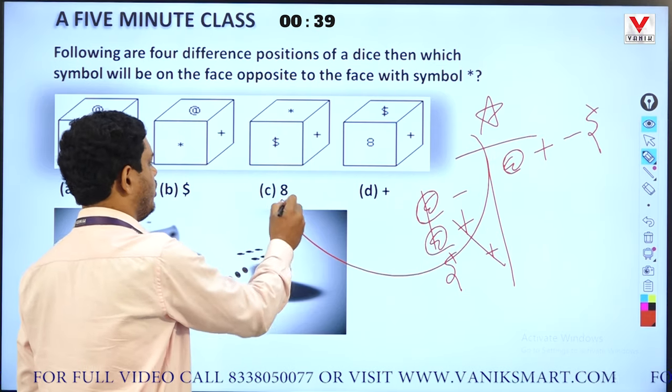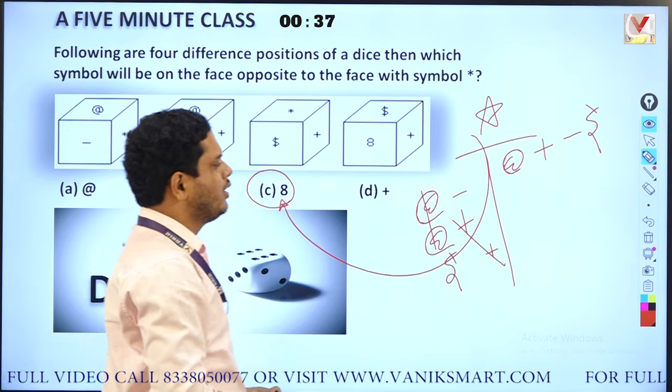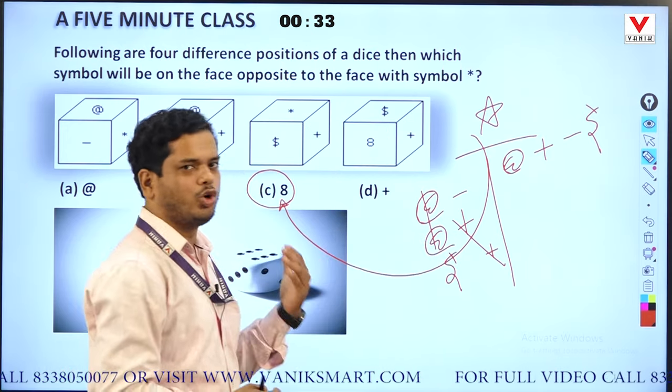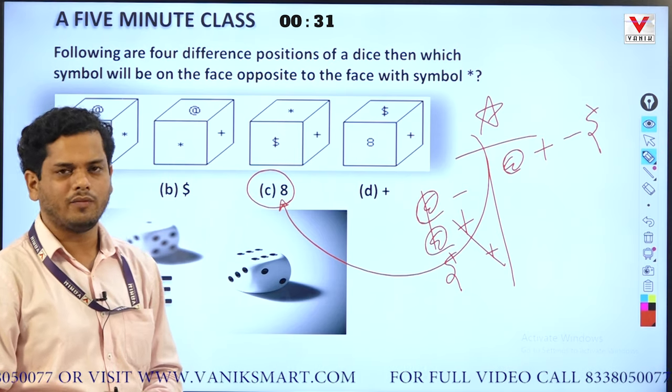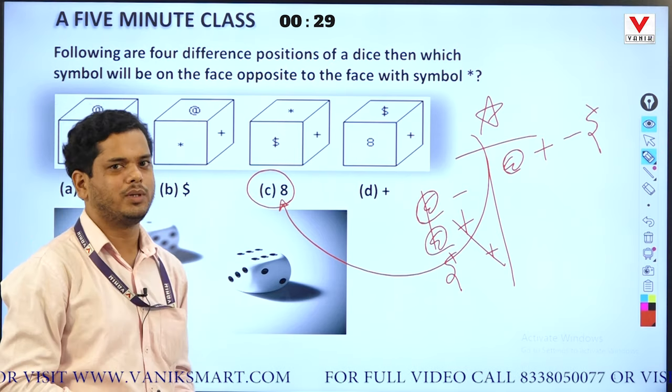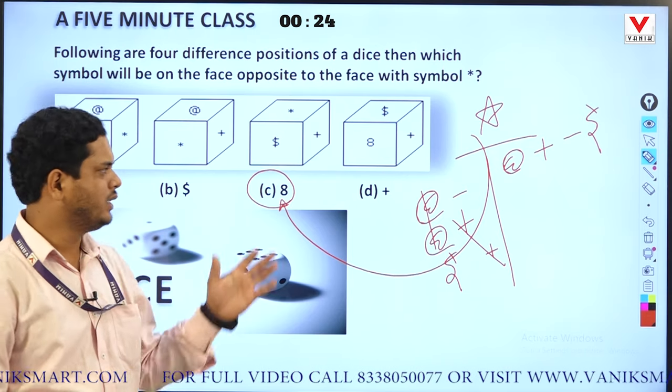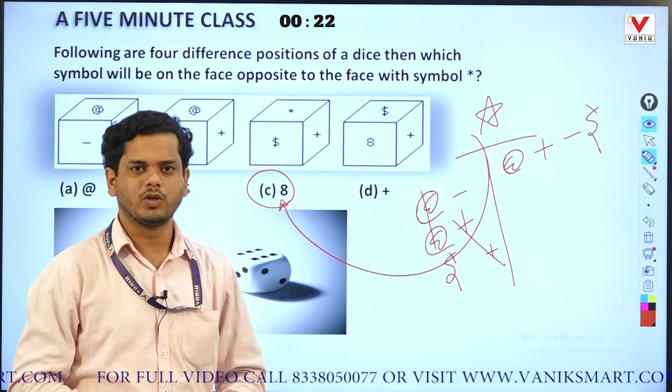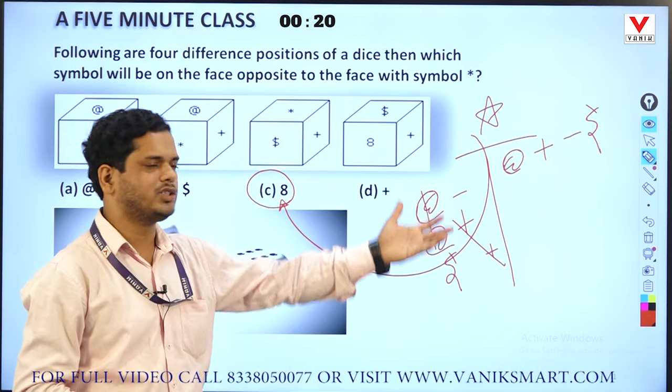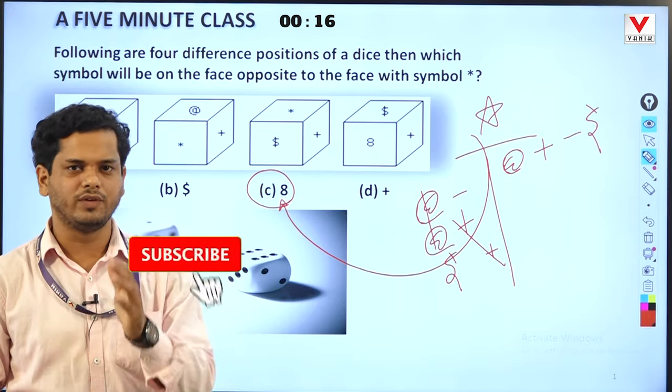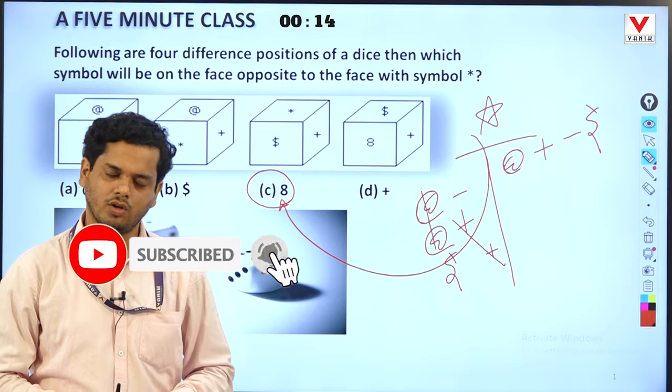For dice, if you use option cancellation method, it will be quite effective. This is one of the best and effective short tricks ever for dice. But not every question qualifies for this method - there are many other tricks which you'll get in the full video. This short video just gives you a hint. Thank you so much for watching.